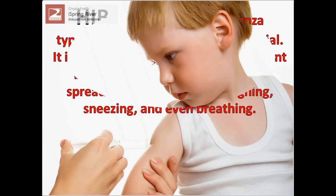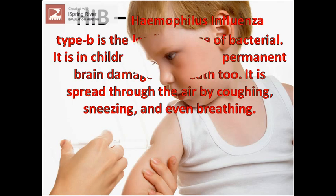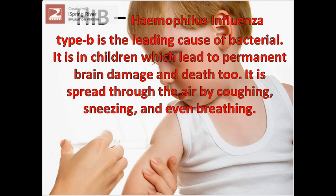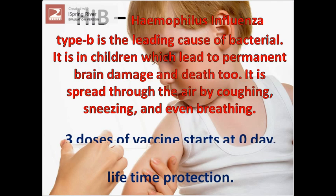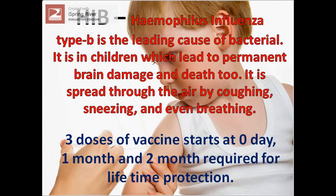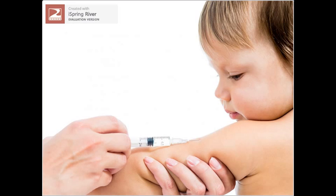Hib — Haemophilus influenzae type B — is the leading cause of bacterial meningitis in children, which can lead to permanent brain damage and death. It is spread through the air by coughing, sneezing, and even breathing. 3 doses of vaccine starting at day 0, 1 month, and 2 months, required for lifetime protection.